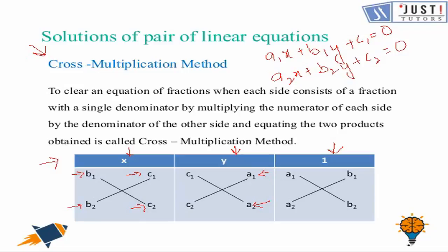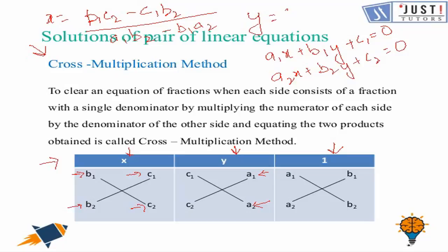For the value of y, it is c1, c2, a1, and a2. For the constant, it is a1, a2, b1, b2. So x equals b1·c2 minus c1·b2, divided by a1·b2 minus b1·a2. Similarly for y, it is c1·a2 minus a1·c2, divided by a1·b2 minus b1·a2. These are the values of x and y, and in this way we can solve the equations.